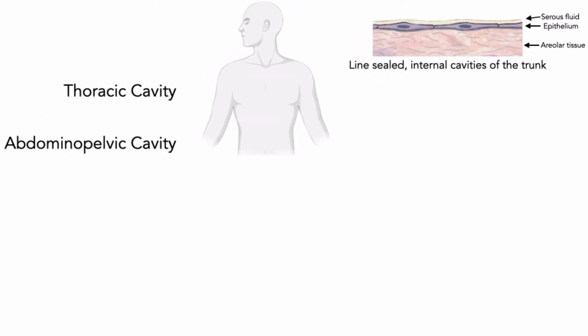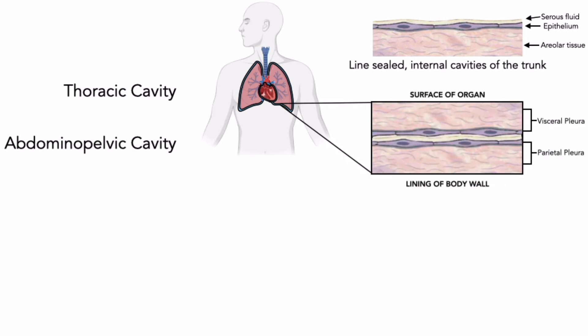The serous membranes of the thoracic cavity are the pleura, which lines the pleural cavities and covers the lungs, and the pericardium, which lines the pericardial cavity and covers the heart. The serous mesothelial membranes have two layers each: an outermost parietal layer and an innermost visceral layer that are in close contact with each other at all times. The parietal layer of the pleura and pericardial membranes lines the inner surface of the thoracic cavity.